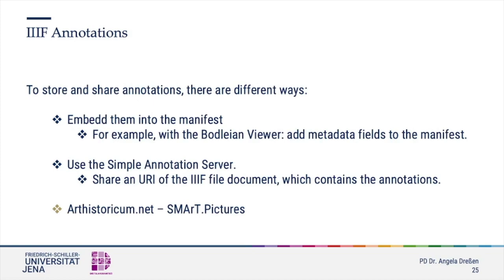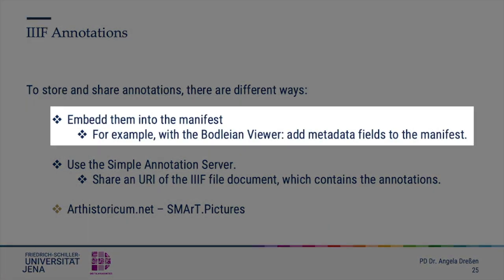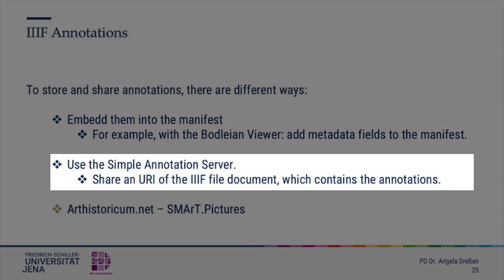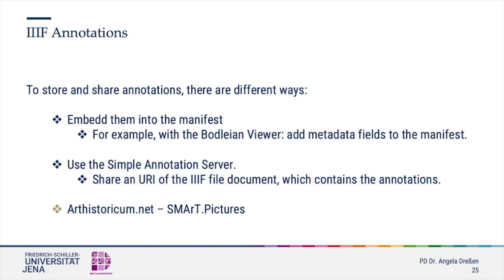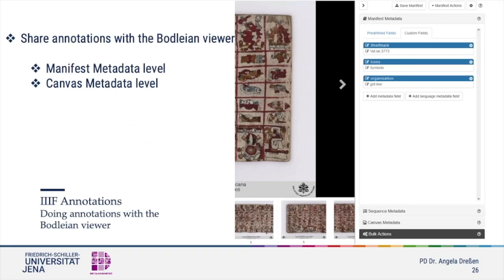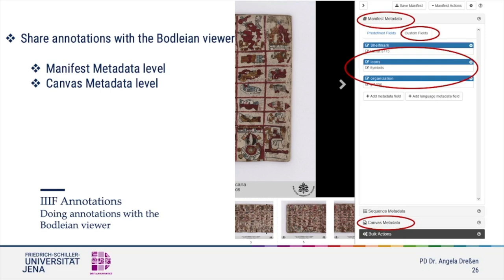There are several ways to do annotations. One possibility is to add notes to the manifest in the Bodleian viewer and save and export them. Another way would be to use the simple annotation server. In the Bodleian viewer, you can add data and notes either by manifest data or on the canvas metadata. Under the rubric custom field, you can click on add metadata field and choose any category or topic you need, together with the specification or some notes. Then you need to save the manuscript and thereafter share it with others.